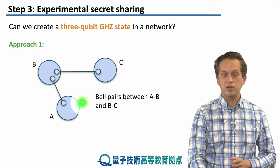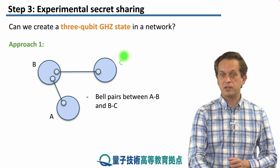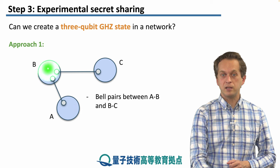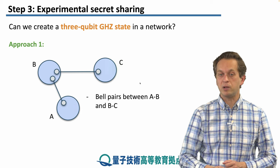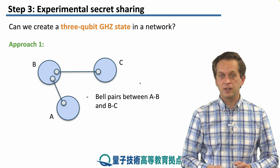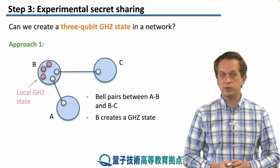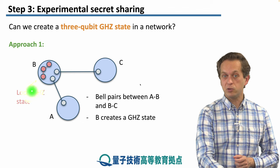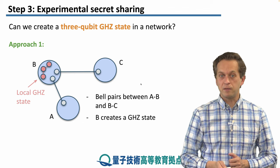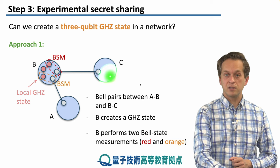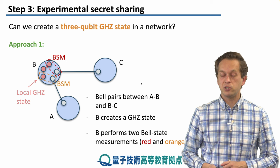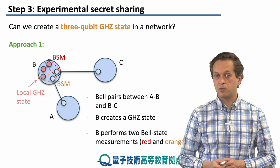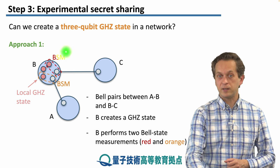In approach one, we have nodes A, B, and C — represented by large blue circles — sharing bell pairs: A entangled with B, and B sharing an entangled bell pair with C. Next, node B generates the three-qubit GHZ state locally using an additional qubit supply. Then node B performs bell state measurements, taking one qubit from the GHZ state and one qubit from quantum memory entangled between B and C — that's the red BSM.